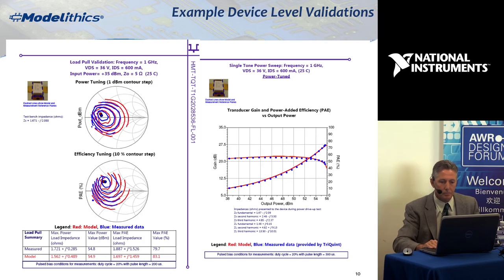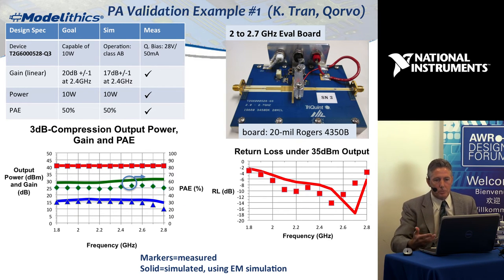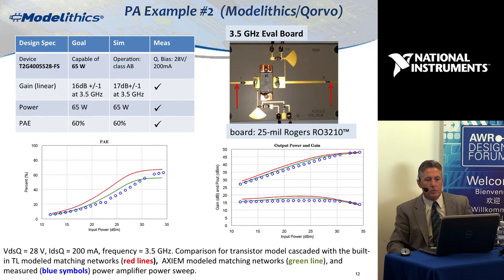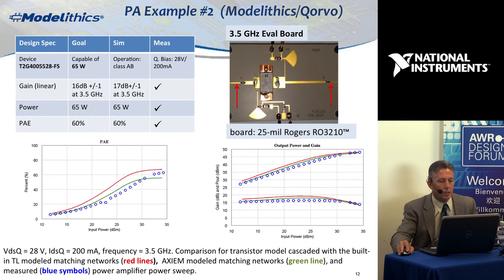At the PA level, I'll give you two examples of PA-level validation. The first was built by TriQuint Corvo — they used the model, designed a reference board at a particular frequency in the 2 to 2.7 GHz band, targeting 10 watts and 50% PAE demonstration. These are the results without any tuning. The next example was originally designed by Charles Suckling at Corvo, and then Model Ethics rebuilt and validated it. This is the large-signal results for a 65-watt design — pretty good agreement and about 60% efficiency. The green line is Axiom results and the red line uses built-in transmission models.